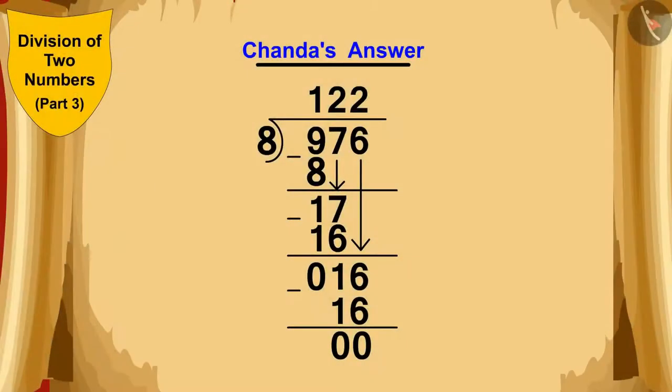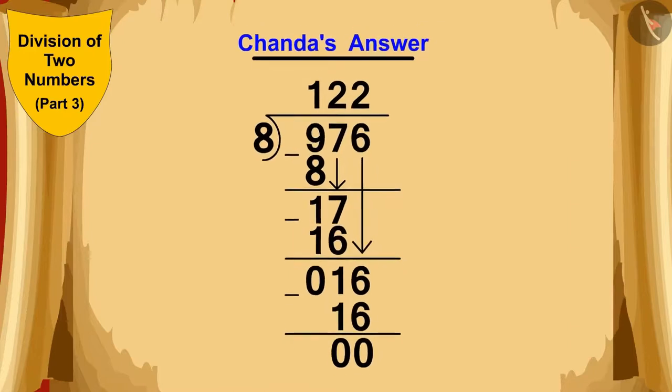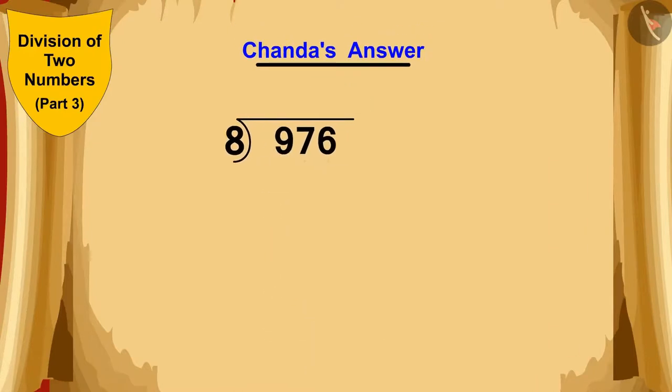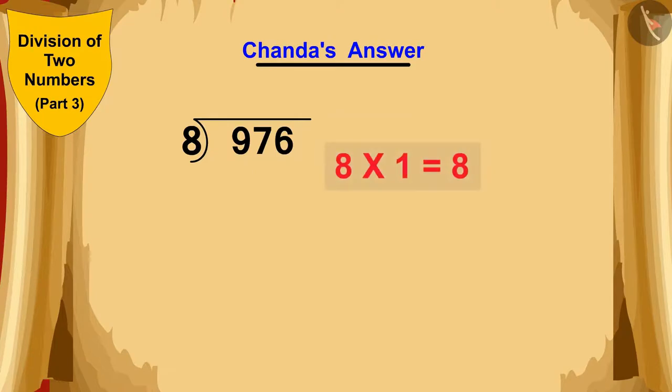Now, let us see how Chanda did this division. Chanda saw that she could divide 9 by 8. 8 times 1 is 8. So, she wrote 1 above, and subtracted 8 from the 9, and wrote 1 below. Now, Chanda wrote the next number, 7, next to the 1 below.